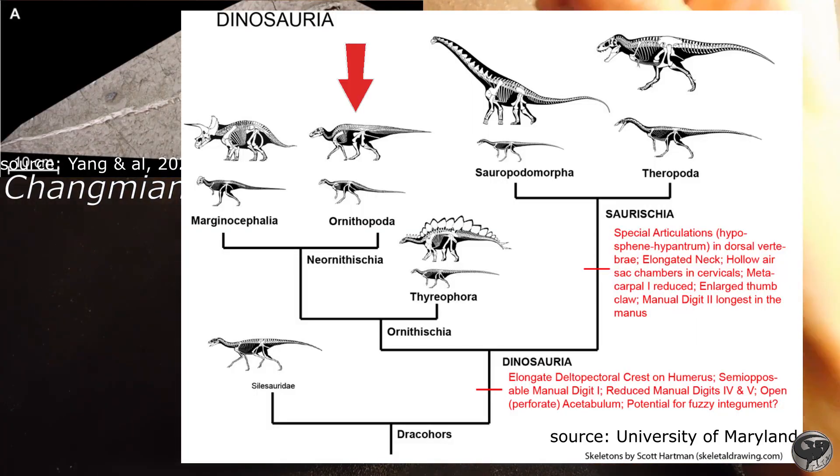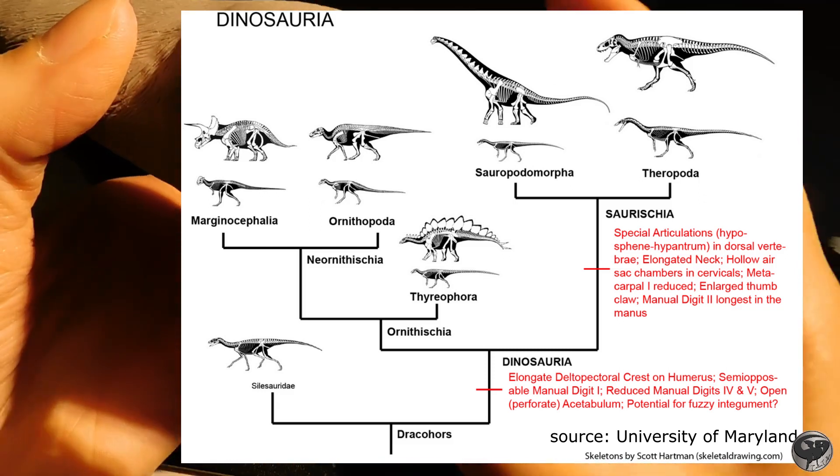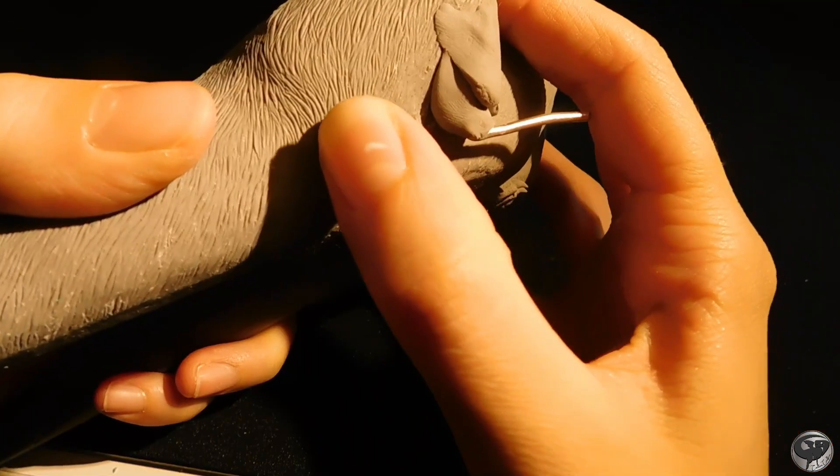Although it's an ornithopod and not a theropod, I assume that their tails might sit in the same way, since they're both bipedal.